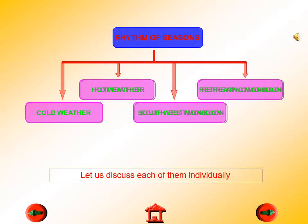At number one we have summer, or the hot weather season. At number two it's winter, or the cold weather season. Number three is the southwest monsoon, or the advancing monsoon, also called the rainy season. At number four we have the retreating monsoon season. Today we are going to discuss one of the four seasons, and ultimately by the end of the chapter we will have discussed each season individually.